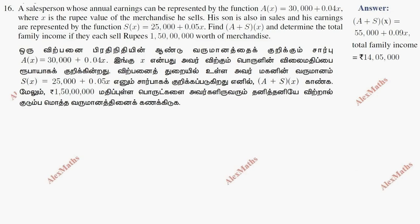Hi students, this is Alex here. Question number 16. A salesperson whose annual earnings can be represented by the function A of X. A of X is 30,000 plus 0.04X, where X is the rupee value of the merchandise he sells.